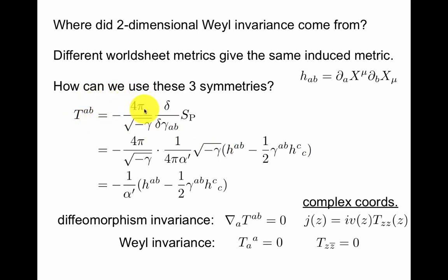By dividing by this object here, it's slightly non-standard normalization in field theory, but in string theory this is conventional. Then you cancel this funny factor and you have this nice object left. So this is the stress energy tensor derived from the Polyakov action.